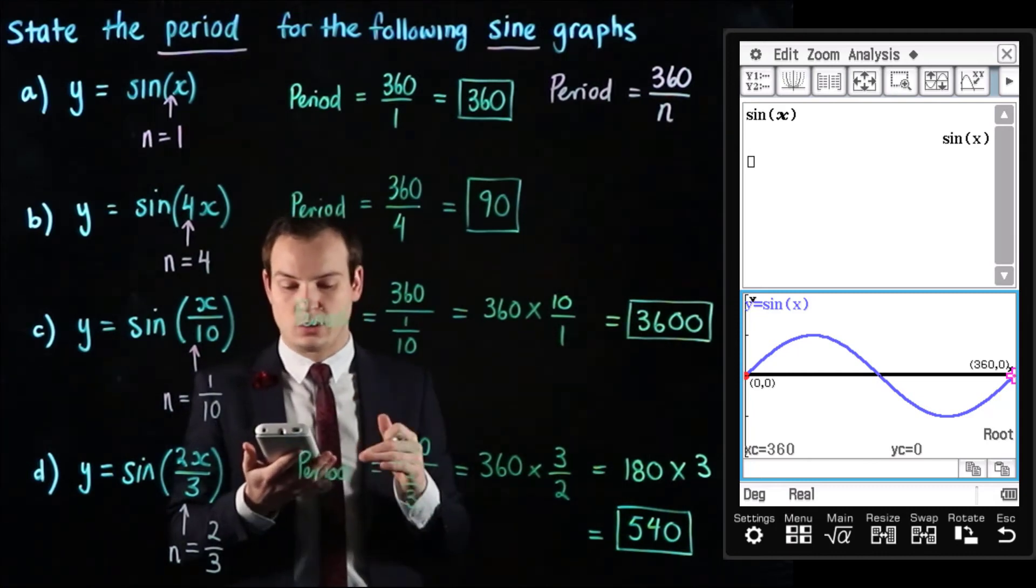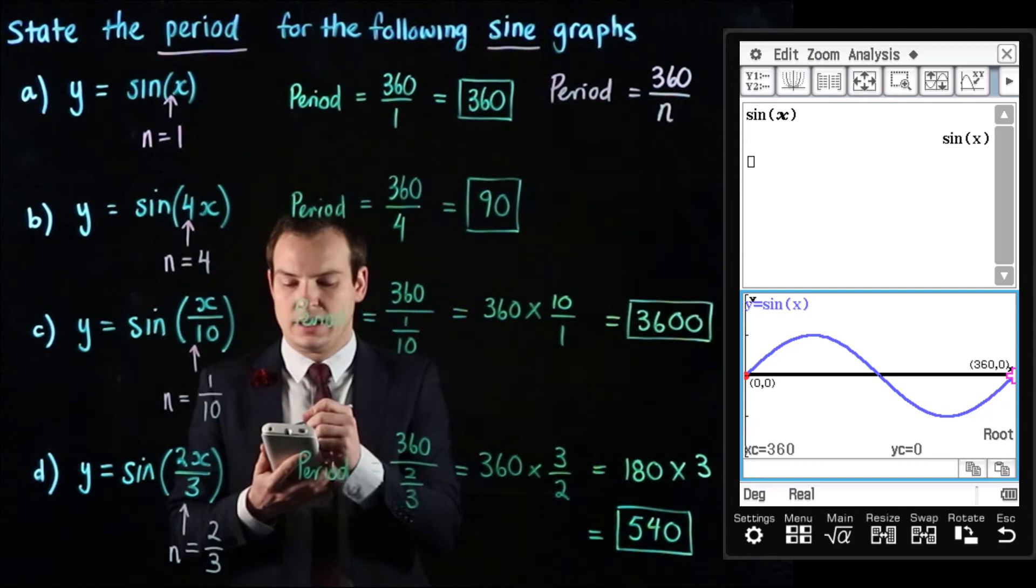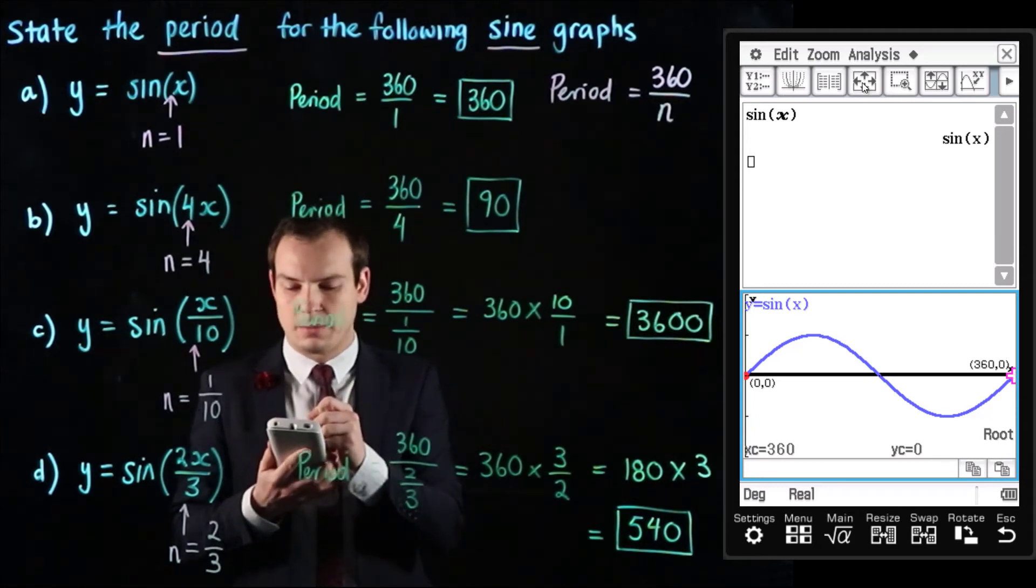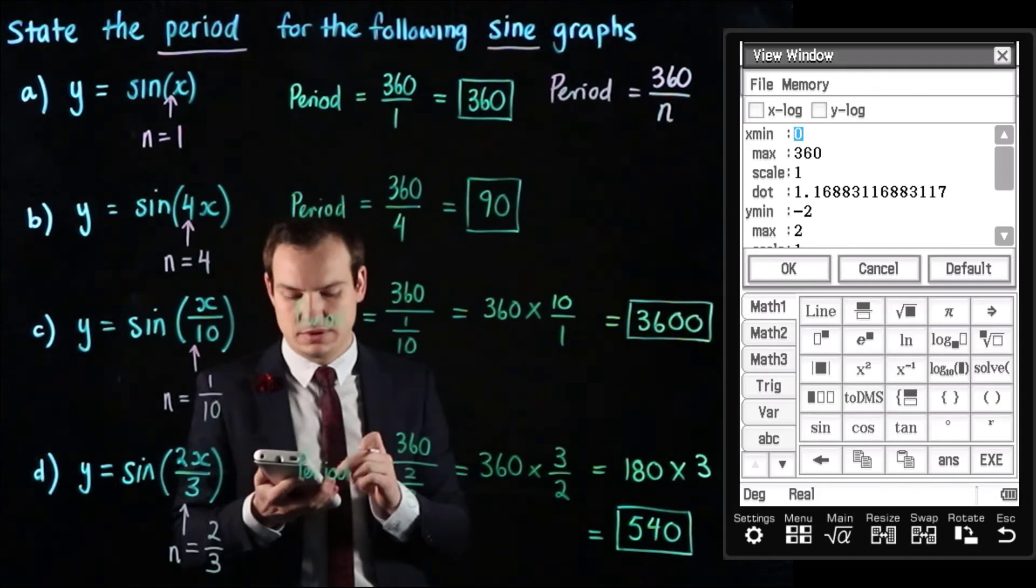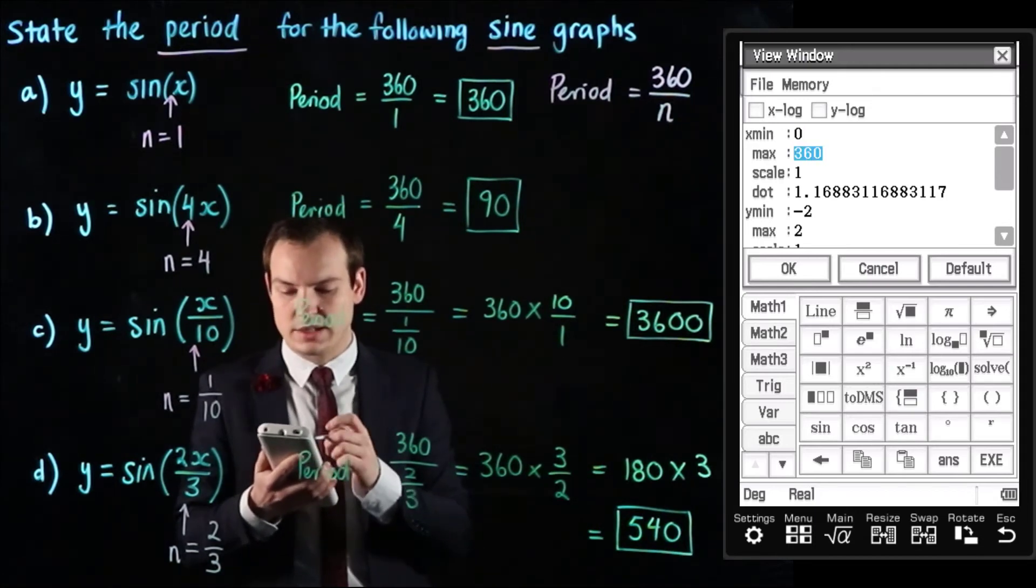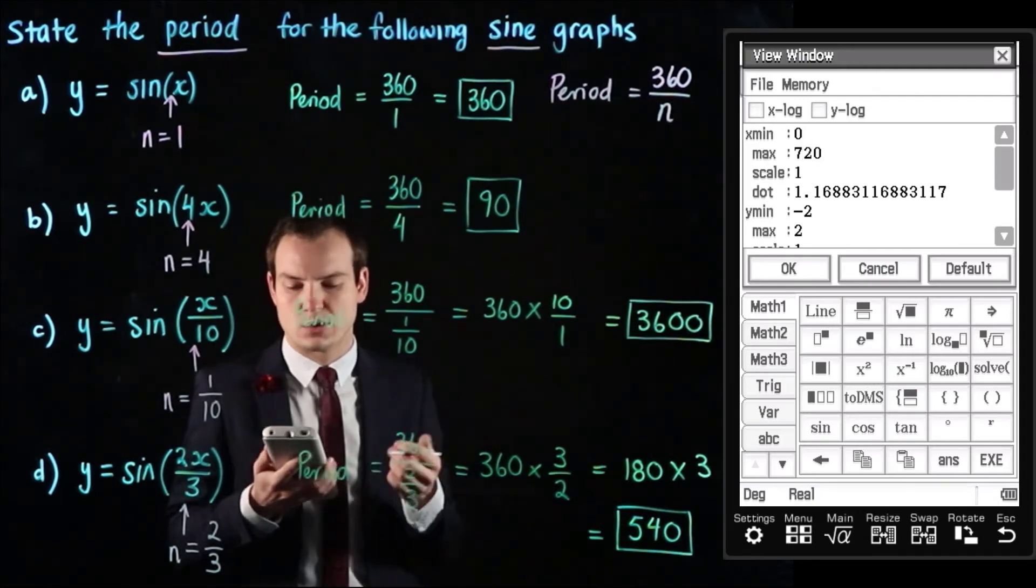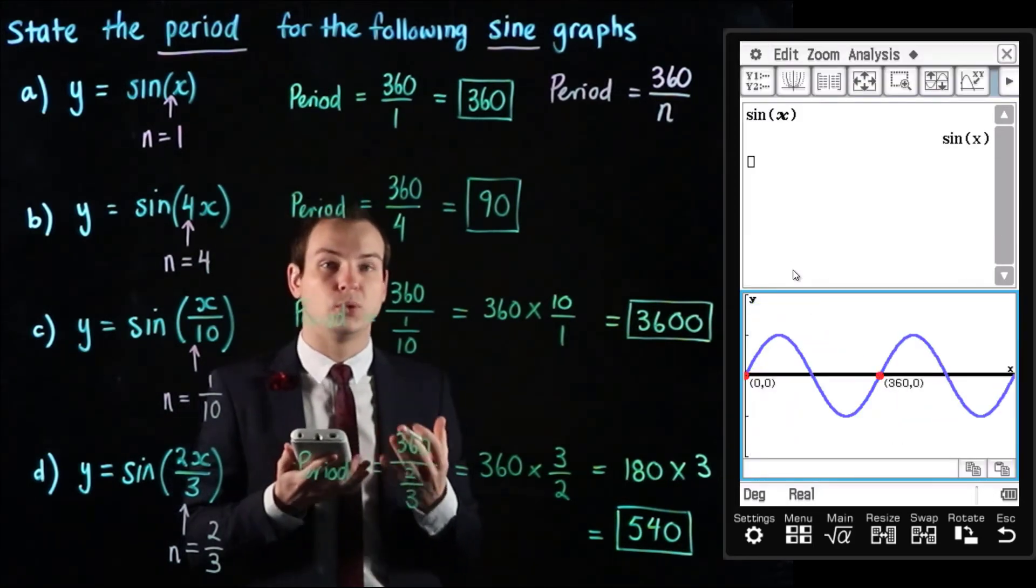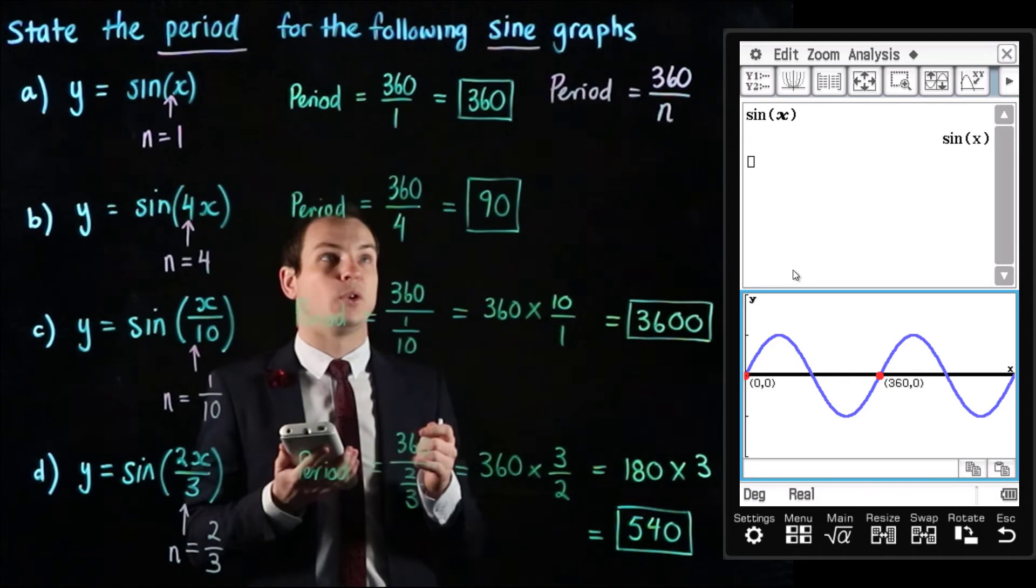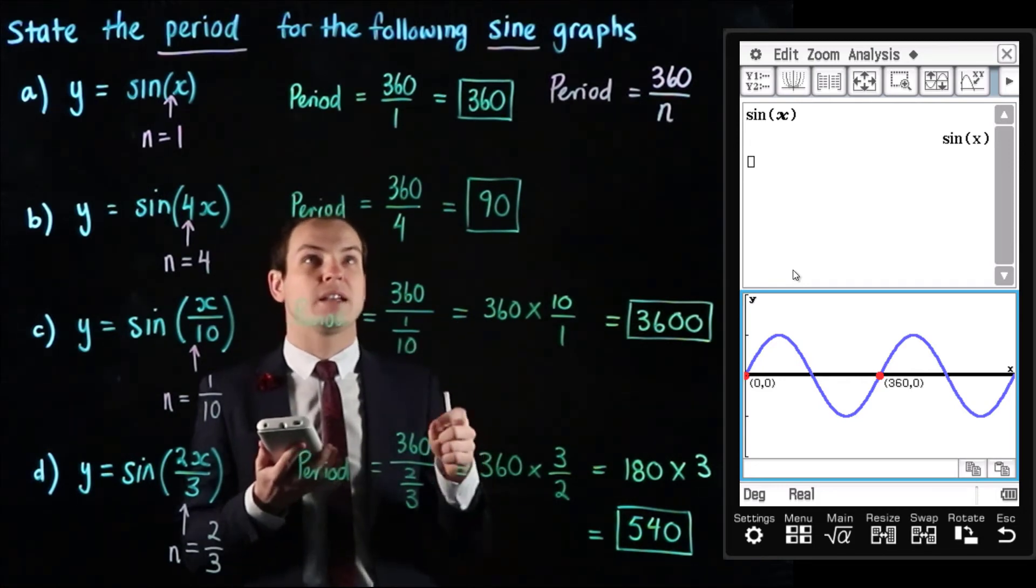So that shows that one cycle takes 360 degrees and just for interest sake if I went up to those four arrows again and I changed the x maximum to be say 720 degrees or 720 as a value and hit execute you can see we now get two full cycles of the graph for 720 degrees and that makes sense because 360 plus 360 so two cycles adds up to 720.